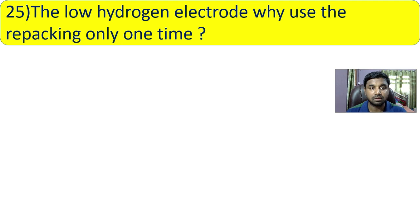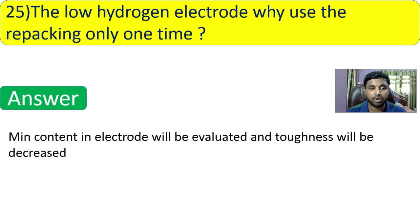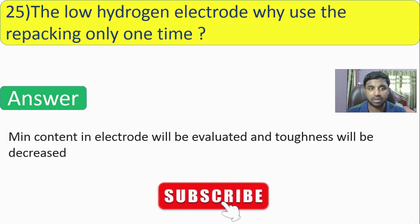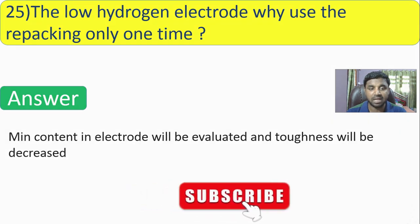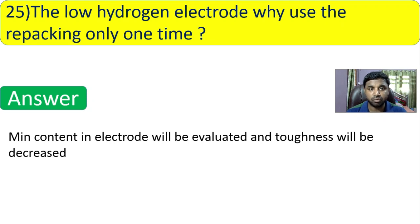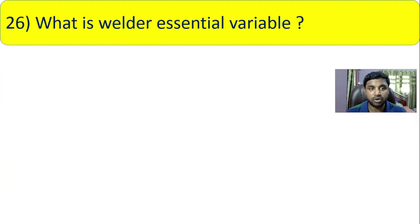Question 25: why is a low hydrogen electrode used with repacking only one time? Because the moisture content in the electrode must be controlled and evaluated. If you repack the electrode again and again, you cannot track how many electrodes are there and cannot evaluate the moisture content. Additionally, toughness will decrease with repeated repacking.